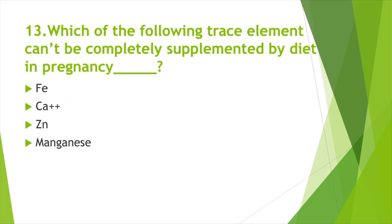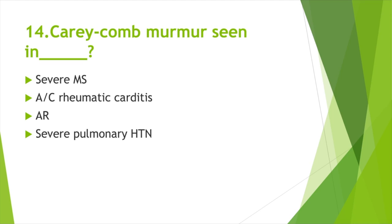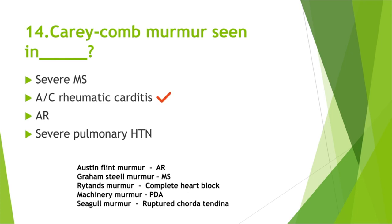Which of the following trace elements cannot be completely supplemented by diet in pregnancy? Option A: Iron, Option B: Calcium, Option C: Zinc, Option D: Manganese. Answer: Option A, Iron. Caricam murmur is seen in — Option A: Severe mitral stenosis, Option B: Acute rheumatic carditis, Option C: Aortic regurgitation, Option D: Severe pulmonary hypertension. Answer: Option B, Acute rheumatic carditis.